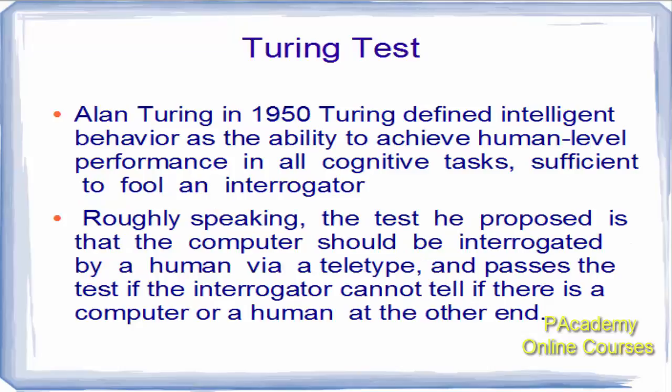One benchmark for a system able to demonstrate artificial intelligence is the Turing test. Alan Turing in 1950 defined intelligent behavior as the ability to achieve human-level performance in all cognitive tasks sufficient to fool an interrogator.